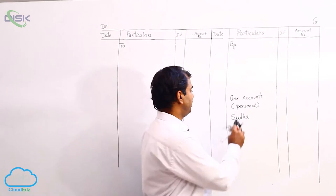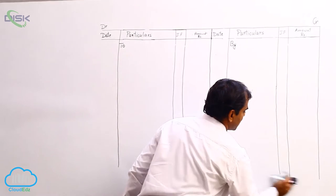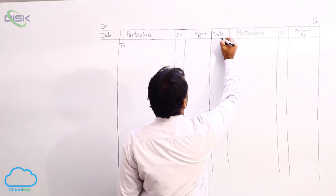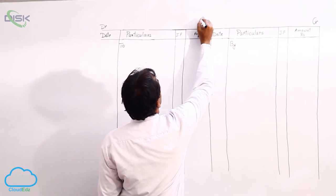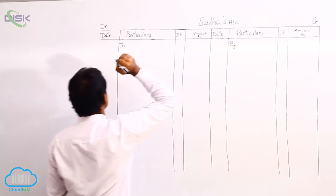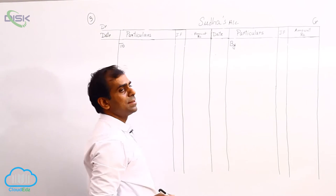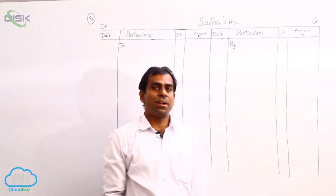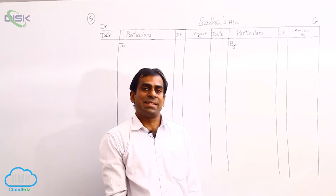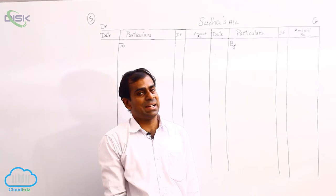Coming to the problem, you require the format. The format for a ledger is this. Using this format, we will be preparing Sudha's account. It is problem number three. If you see the solution for the second question, we have closed the second account — it showed us some balance. The same balance we took to the opposite side as the opening balance for the next month.